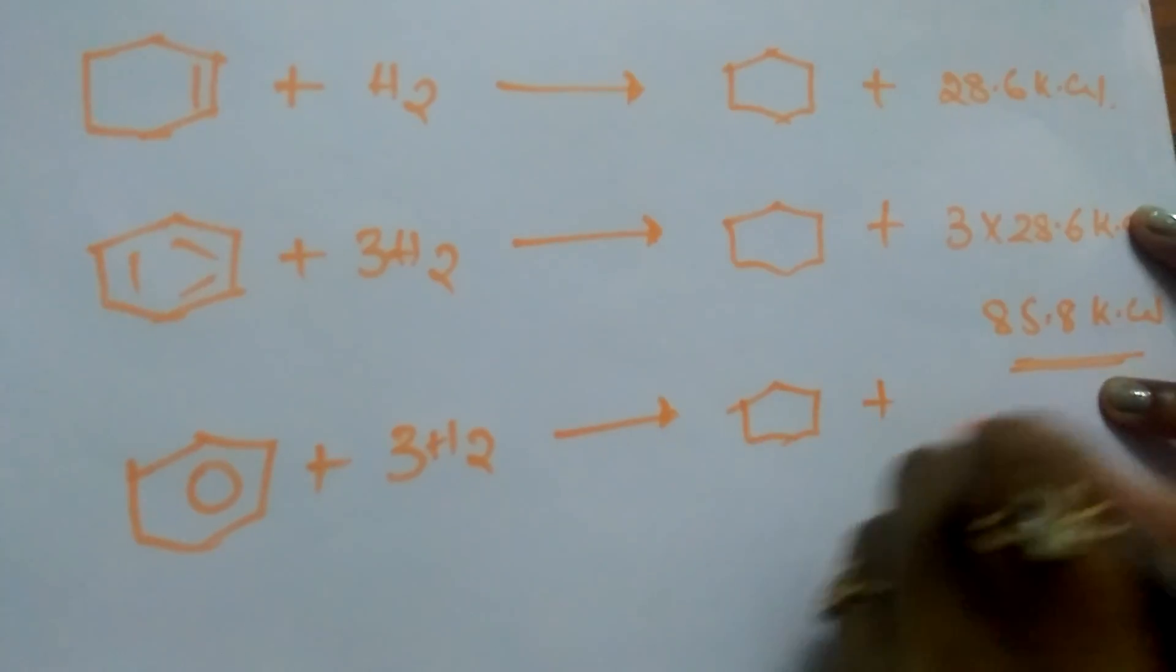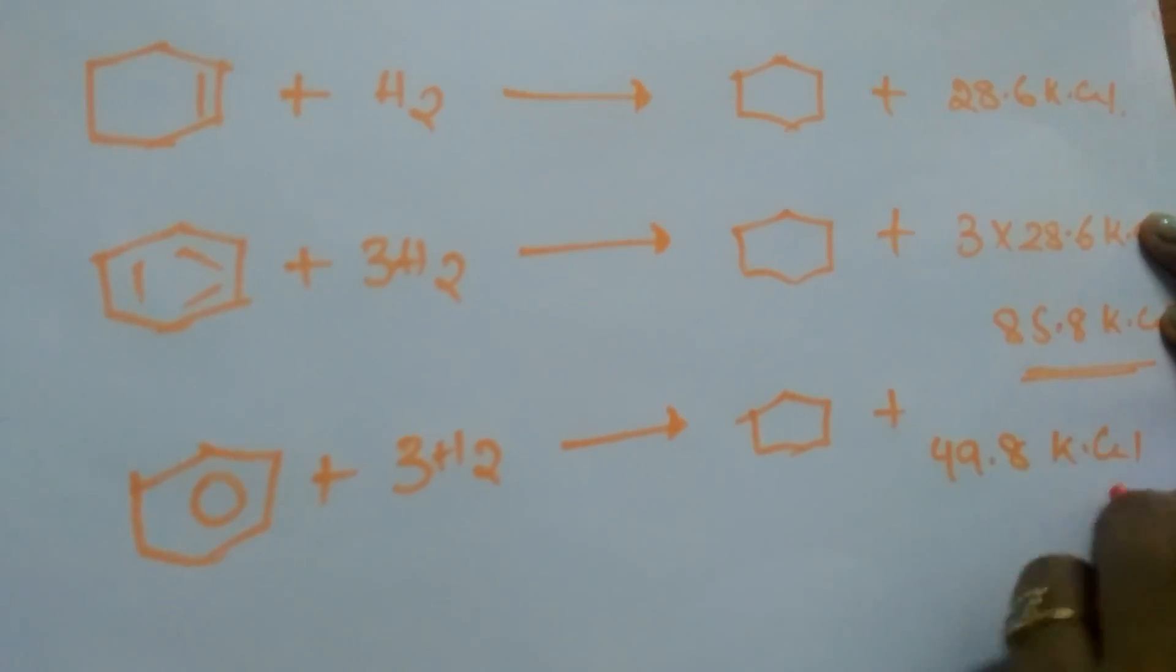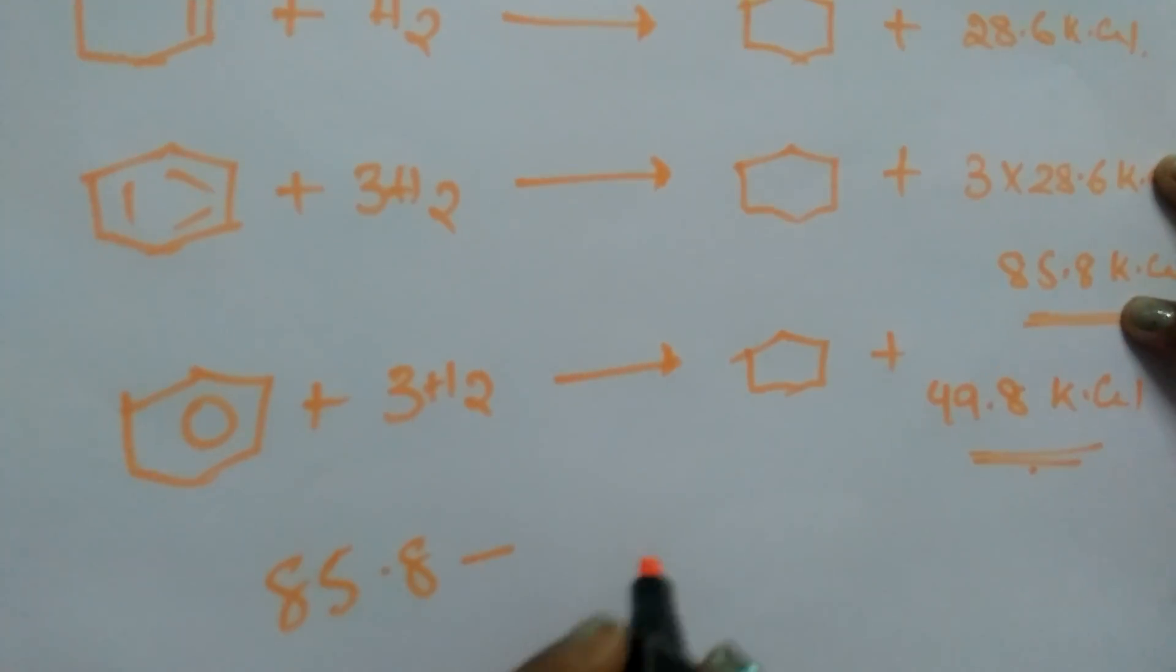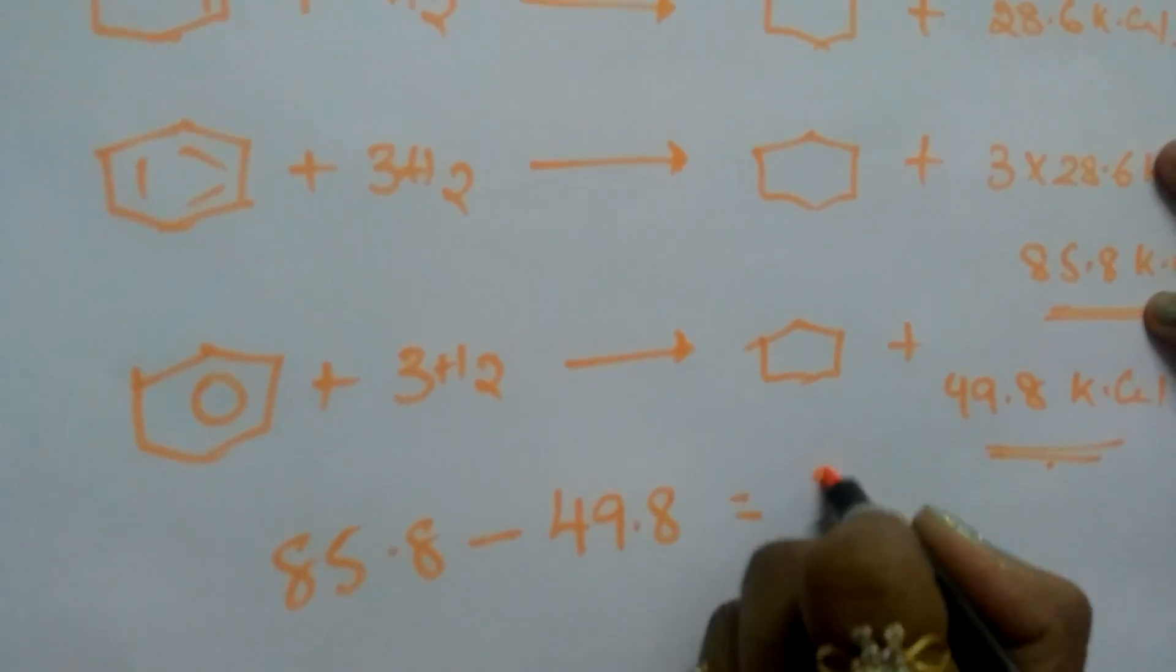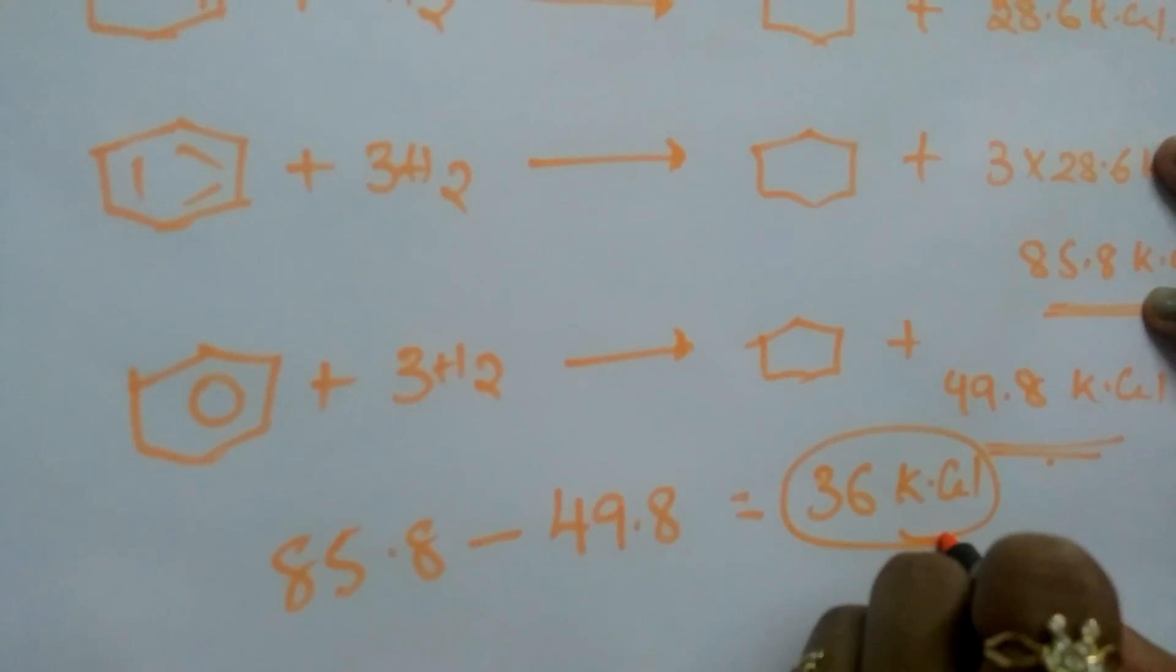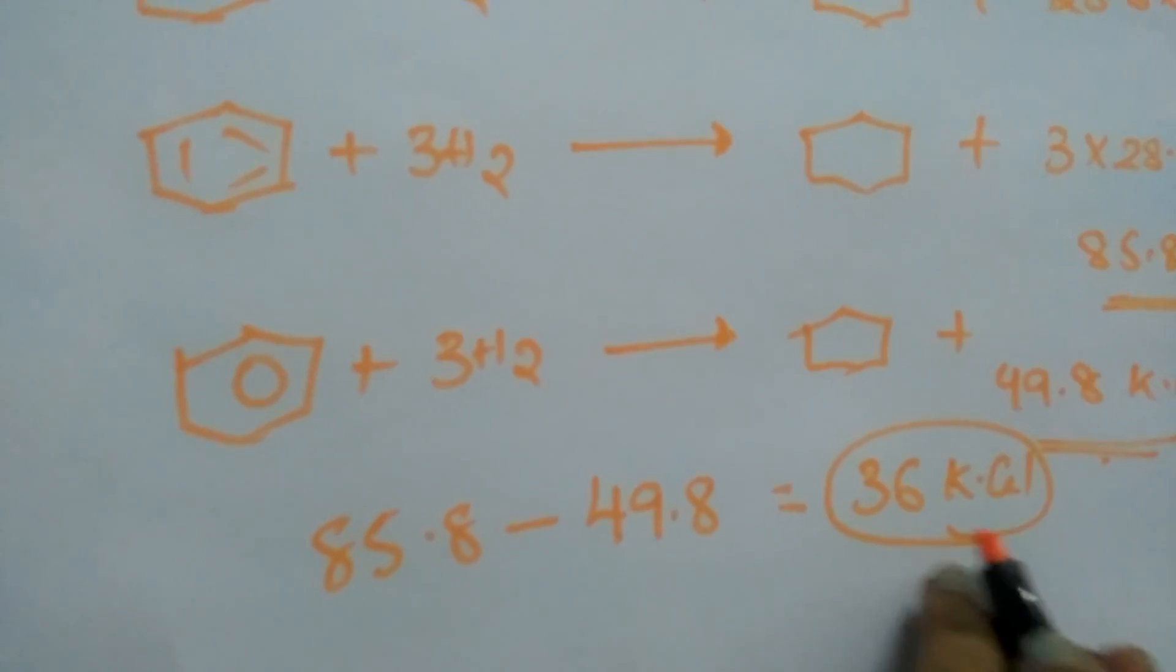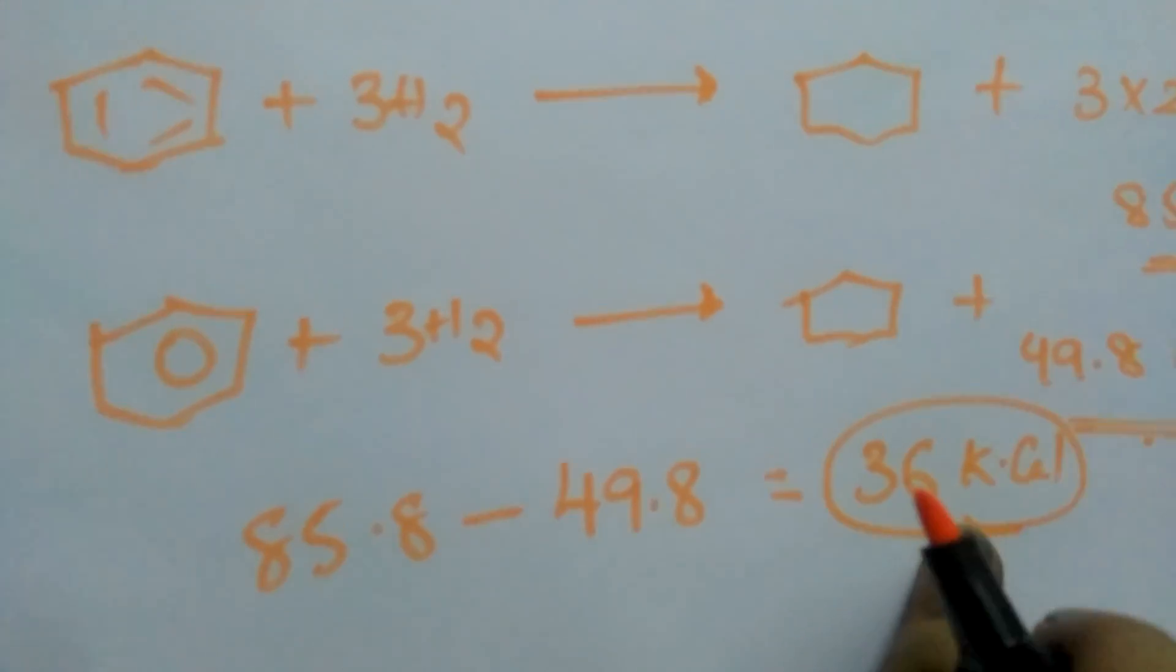How much is the difference between these two energies? 85.8 minus 49.8 means 36 kilocalories of energy is the difference. This is the expected one, but this is the practical one, real energy. This is the amount of energy difference. This is the resonance energy.